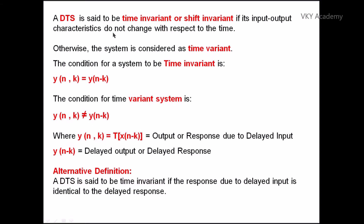A discrete time system is said to be time invariant or shift invariant if its input-output characteristics do not change with respect to time. This is the definition of a time invariant or shift invariant system. Otherwise the system is considered as time variant. We need to understand that the system characteristic must not change with respect to time — then only we can say that the system is a time invariant system.